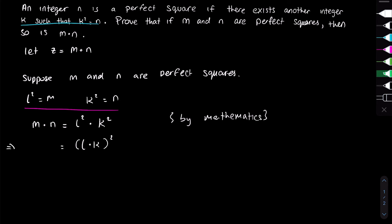Now, we called m times n as z because we don't want to write m times n all the time. There isn't much else to do because realistically, we've already proven that z is also a perfect square.